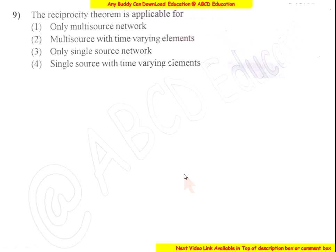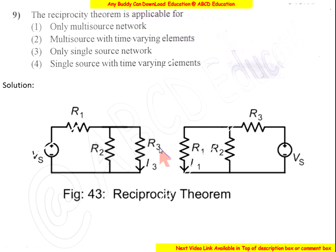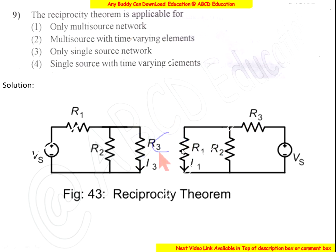The Reciprocity Theorem is applicable only for single-source networks. In a reciprocal network, if a voltage source affects currents through R1, R2, and R3, and the source is moved to another position, the current remains unchanged — this is the reciprocity theorem. It applies only to single-source networks. So the answer is option 3.